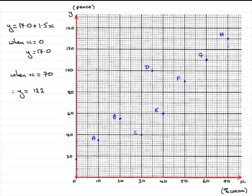So what we need to do is just join those points up. So we go from there to there. And there you have our regression line for y equals 17.0 plus 1.5x. Well, that brings us to the end of this part of the question.